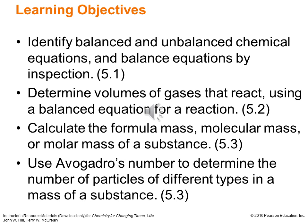Looking at some of our learning objectives for this chapter: we will identify balanced and unbalanced chemical equations, and for those that are unbalanced, we will balance the equations by inspection, looking at what's on the reactant and product sides. We'll also determine volumes of gases that react using a balanced equation, and we'll see there's a special way to look at gas volumes without necessarily having to look at masses or moles directly.